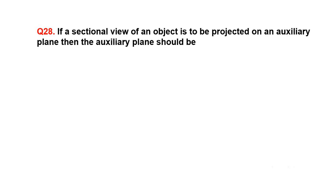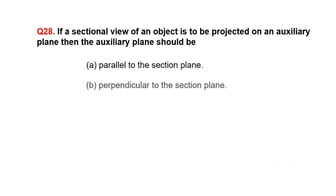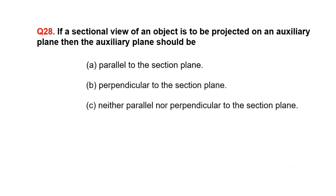If a sectional view of an object is to be projected on an auxiliary plane, then the auxiliary plane should be: A. Parallel to the section plane, B. Perpendicular to the section plane, C. Neither parallel nor perpendicular to the section plane.